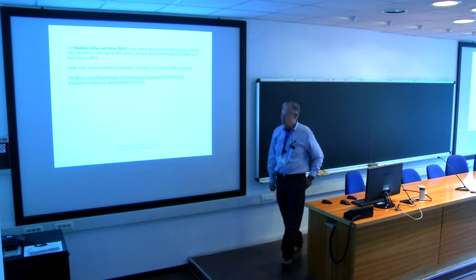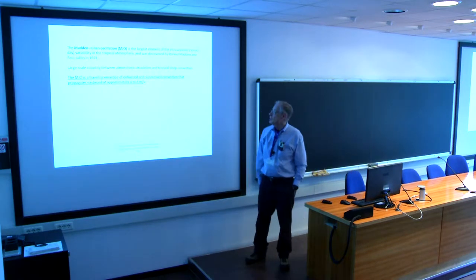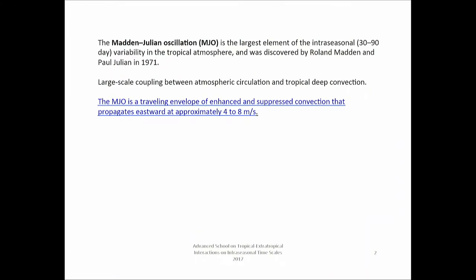Just to introduce it again, the MJO is the largest element of inter-seasonal — here I mean 30 to 90 day — variability in the tropical atmosphere, discovered by Roland Madden and Paul Julian in 1971. It involves a large-scale coupling between the atmospheric circulation and tropical deep convection. The atmospheric circulation goes all the way around the globe, while tropical deep convection is more limited to the Indian Ocean and the Pacific Ocean.